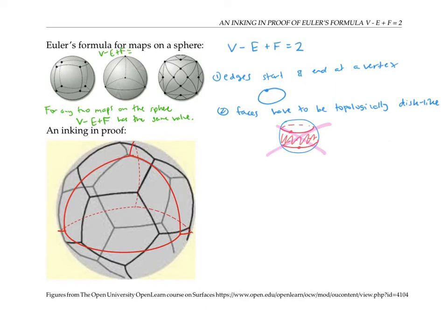For example, this tetrahedral map, where V is 4, E is 6, and F is 4, we get an answer of 2.